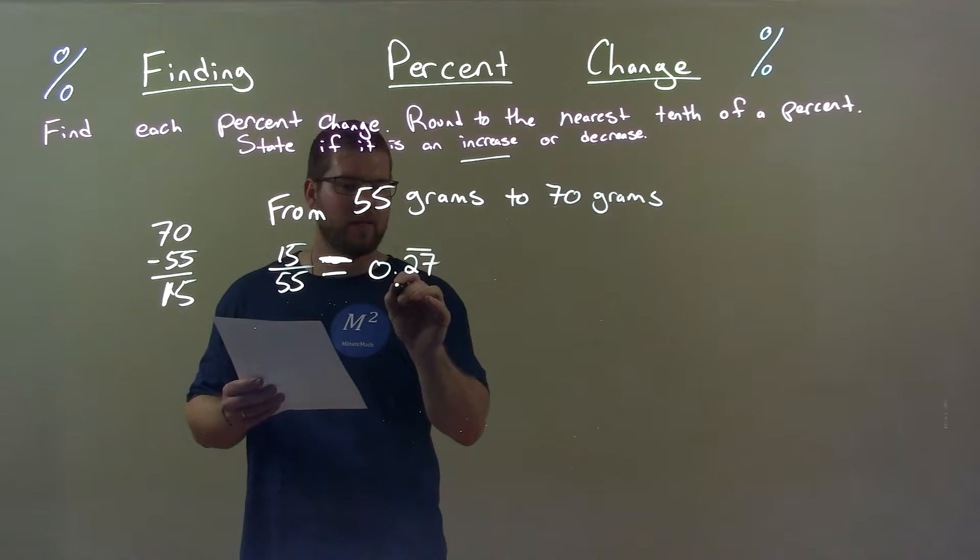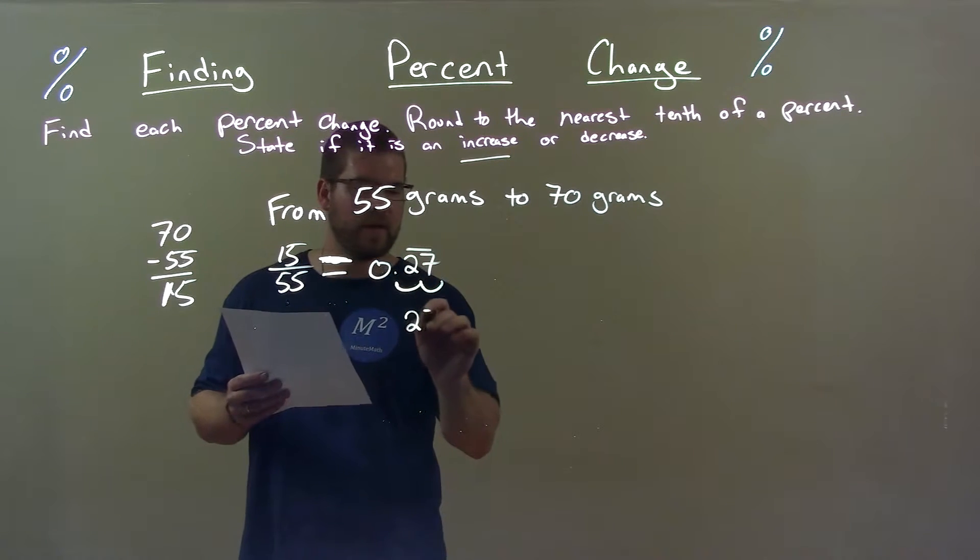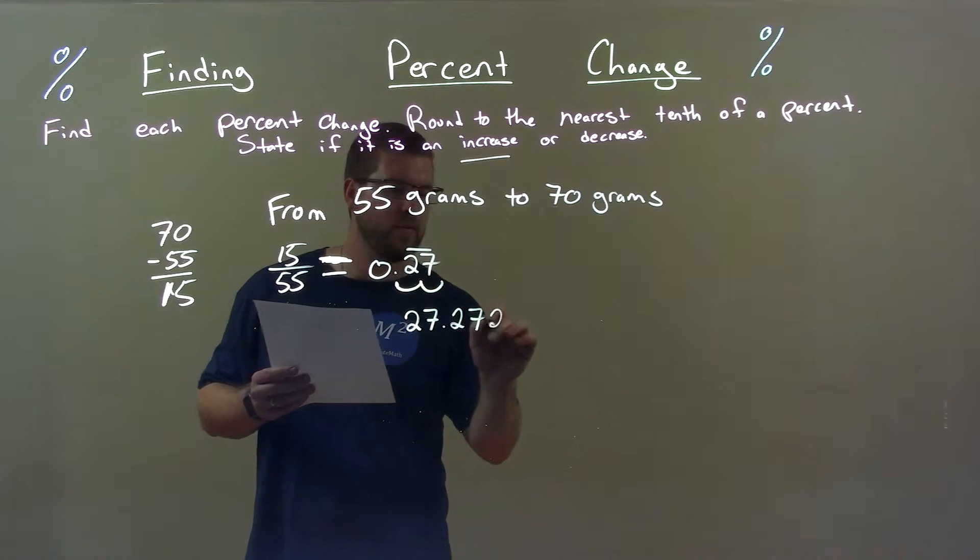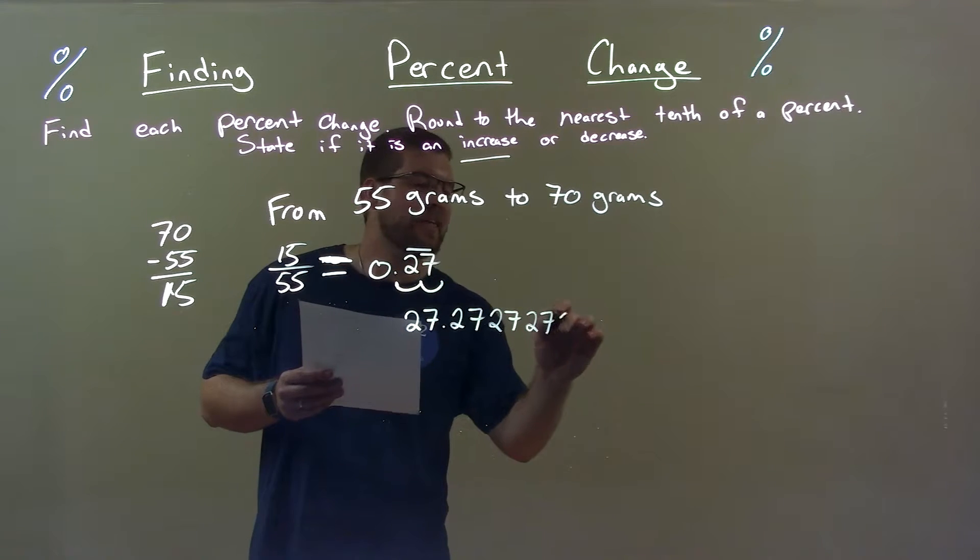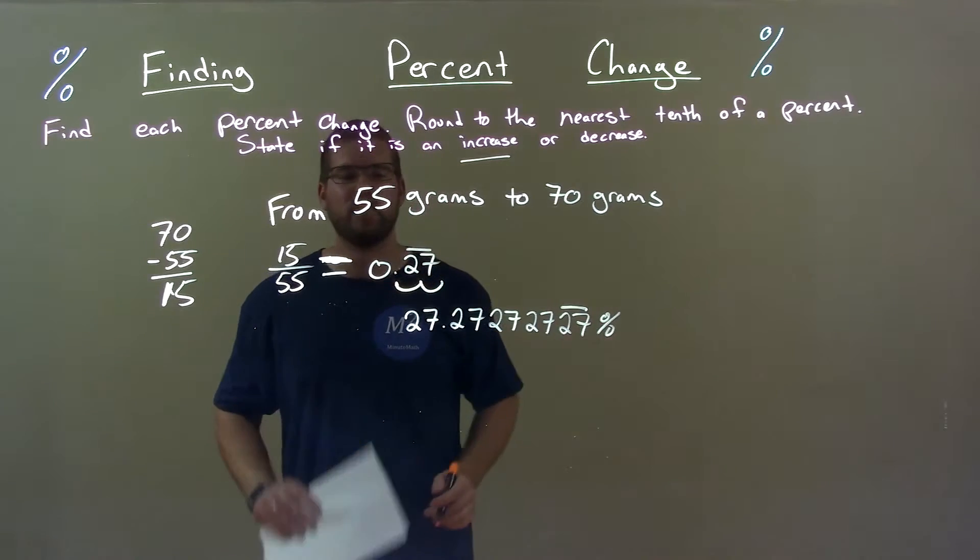All right, that as a percent. Decimal place two spots to the right. 27.2727272727. You get the picture percent.